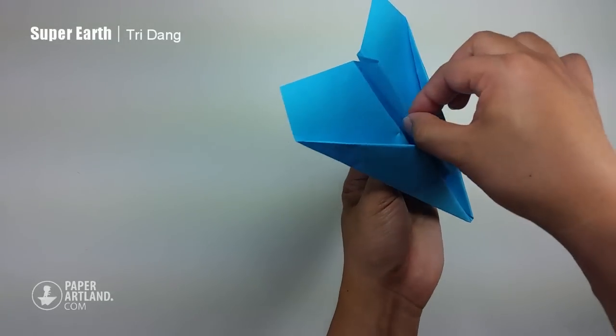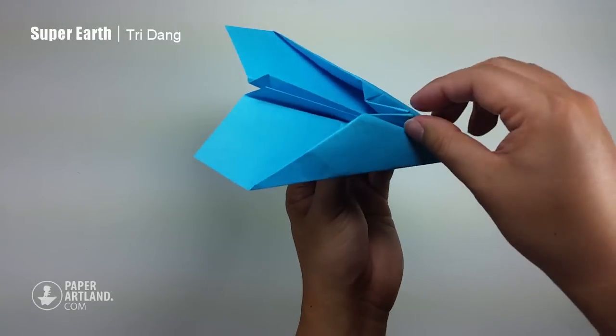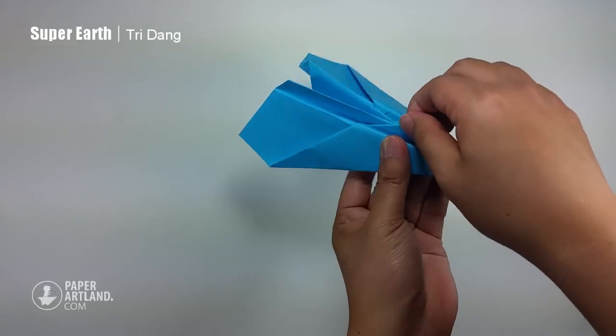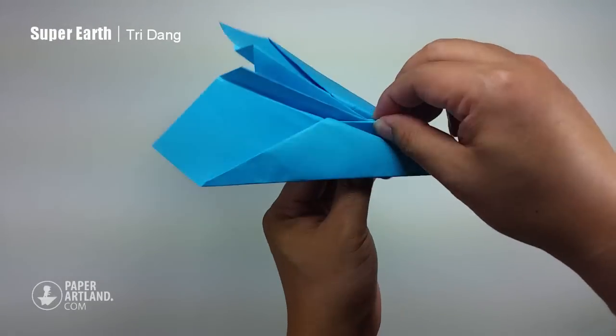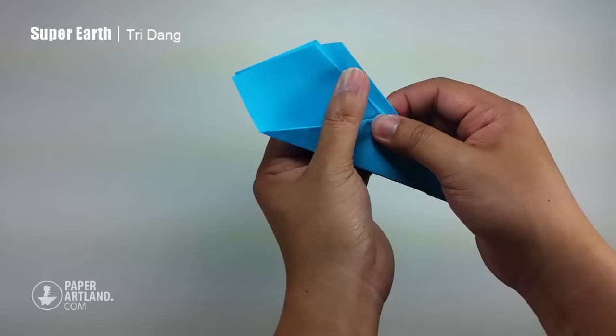I'll just make a crease. I'll press it down. And you can see this triangle shape. It's pulling up. So I push it down. And fold the wings.